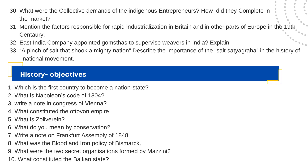What were the collective demands of the indigenous entrepreneurs? How did they compete in the market? Mention the factors responsible for rapid industrialization in Britain and in other parts of Europe in the 19th century.